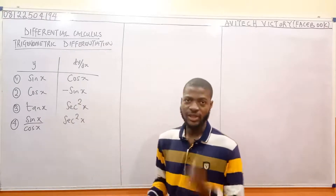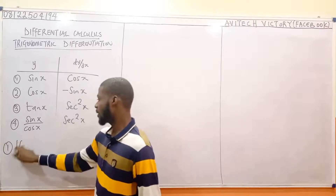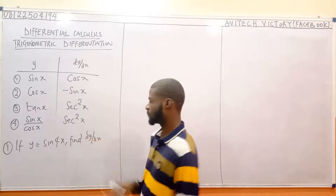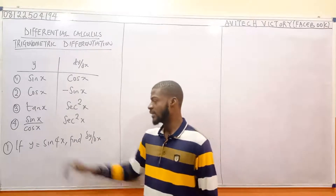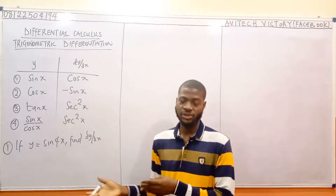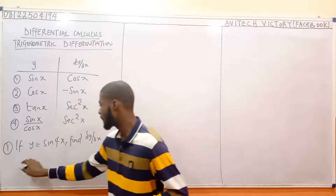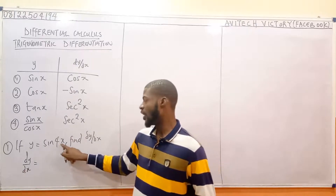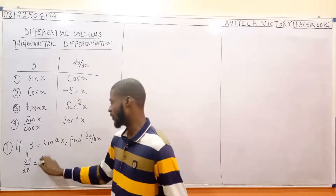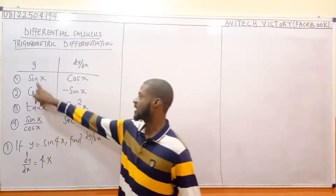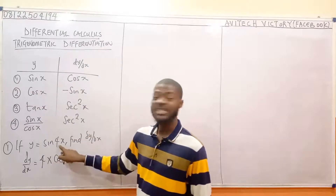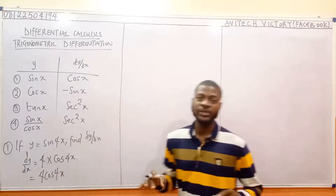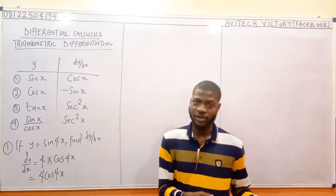First question: if y equals sin(4x), find dy/dx. So dy/dx — differentiate the angle 4x, you get 4. Then differentiate sin, which gives cos. Put the angle back: 4x. So the answer is 4cos(4x). The principle: differentiate the angle, differentiate the trig function, then put the angle back.